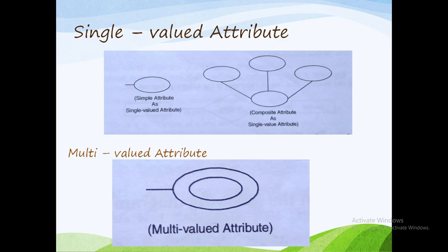Every person has one date of birth and one age. Date of birth is dependent on age. Date of birth can be composite and age can be simple, but both are single-valued. Date of birth is a composite attribute divided into month, date, and year. Age is a simple attribute. Both age and date of birth are single-valued attributes — simple attribute can be single-valued, and composite attribute can also be single-valued.